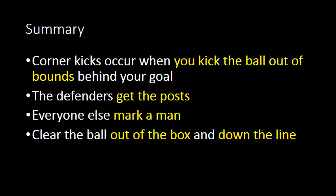In summary, corner kicks occur when you kick the ball out of bounds behind your goal. When a corner kick is going to happen, the defenders need to stand on the post to prevent the ball from slipping past the goalie into the goal. Everyone else needs to mark a man by standing right next to the feet of the opponent, in between the opponent and the goal. If the corner kick comes to you, clear the ball out of the box away from the goal and down the line. Then someone should get the ball again and clear it down the line a second time, hopefully crossing the ball into the opponent's side of the field.